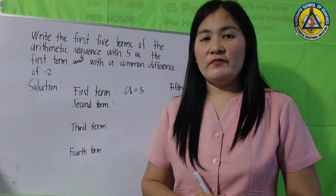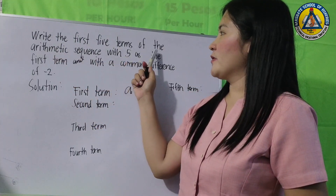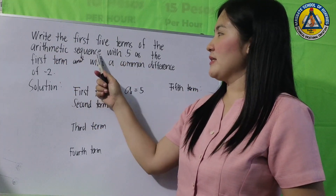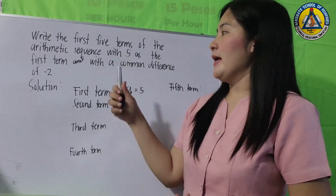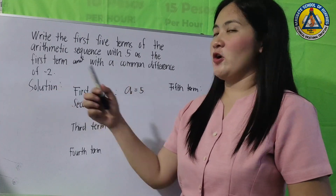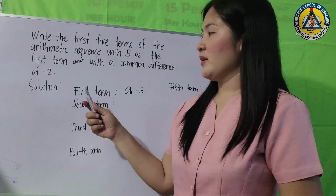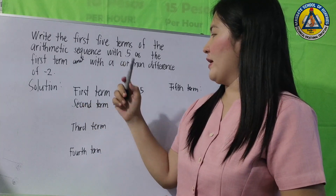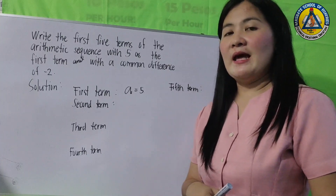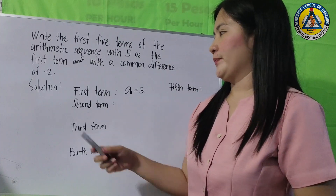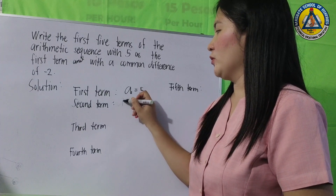Second problem: write the first five terms of the arithmetic sequence with 5 as the first term and a common difference of negative 2. Our first term is given: a(1) = 5. Let us solve for the second term.